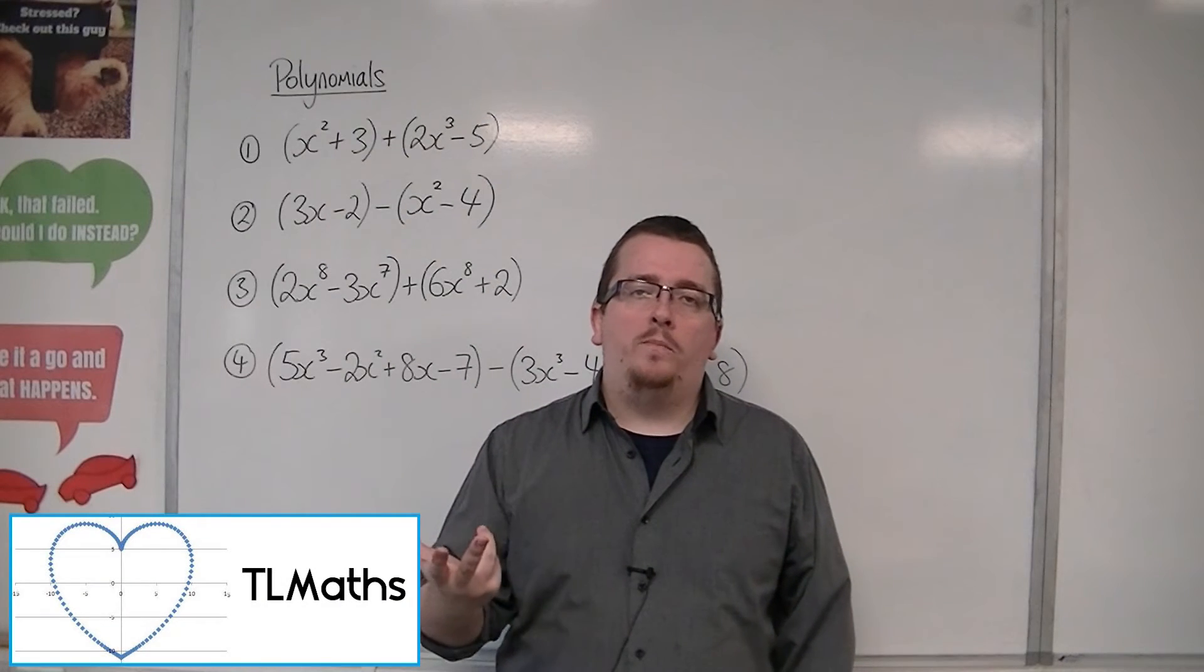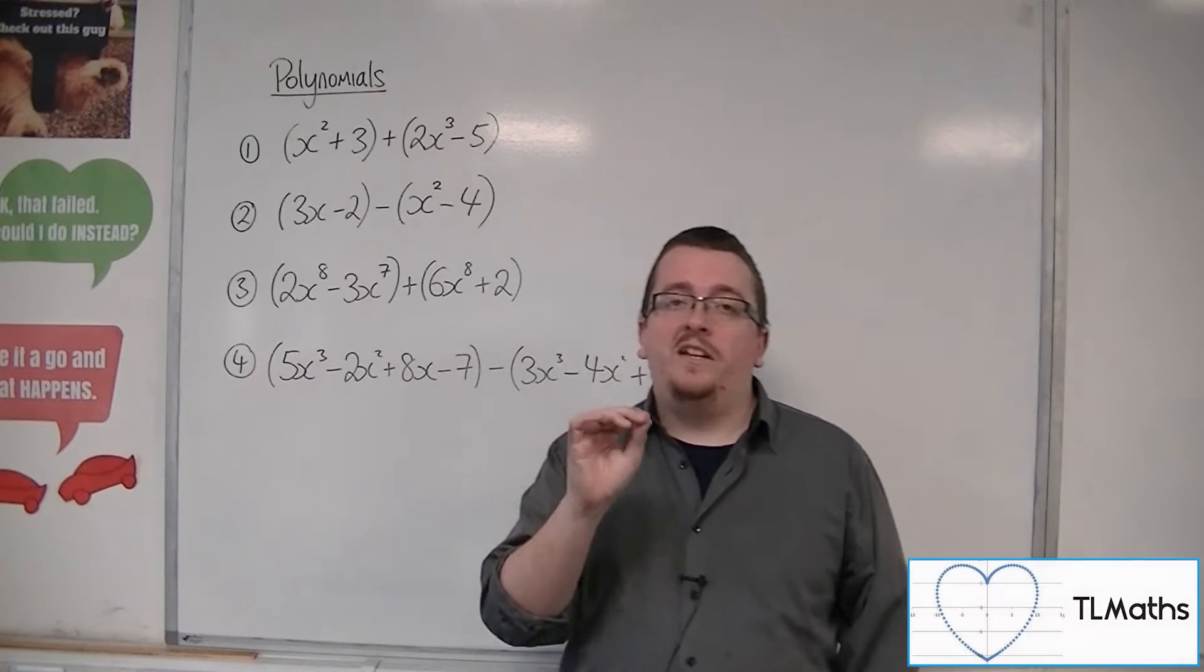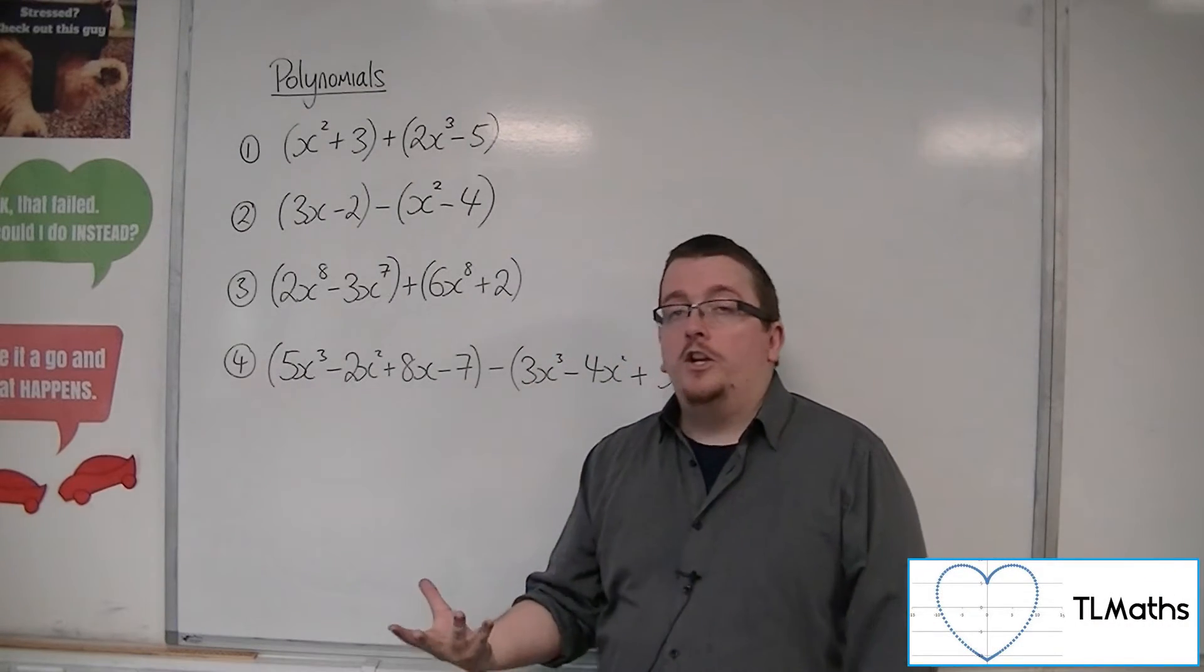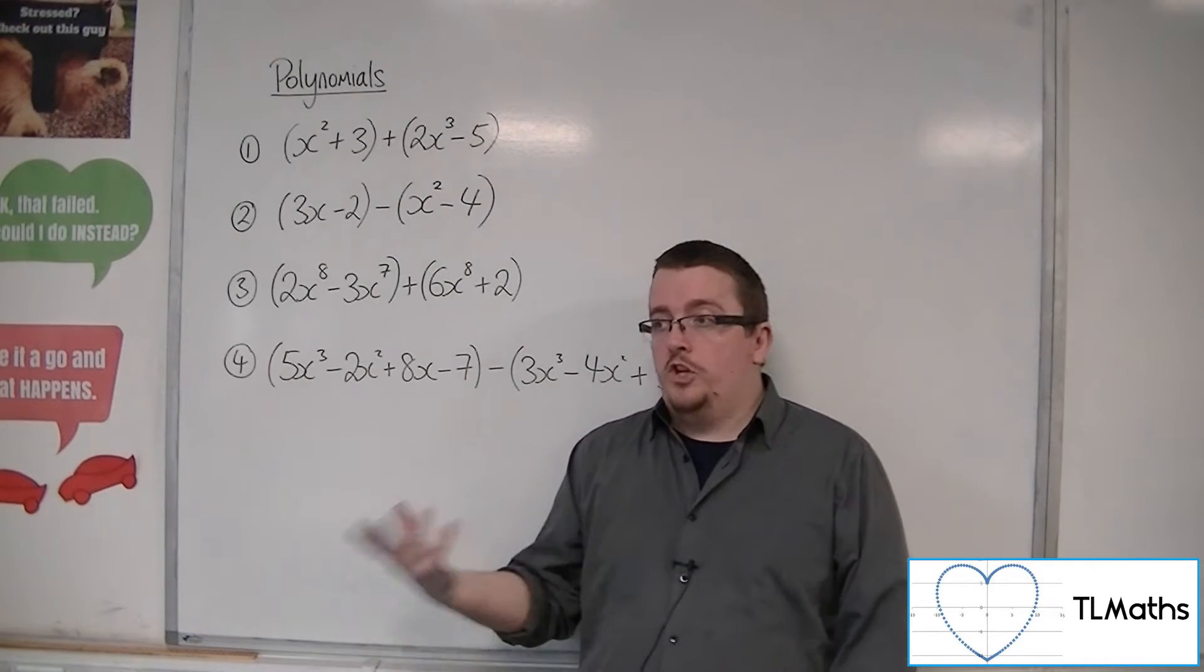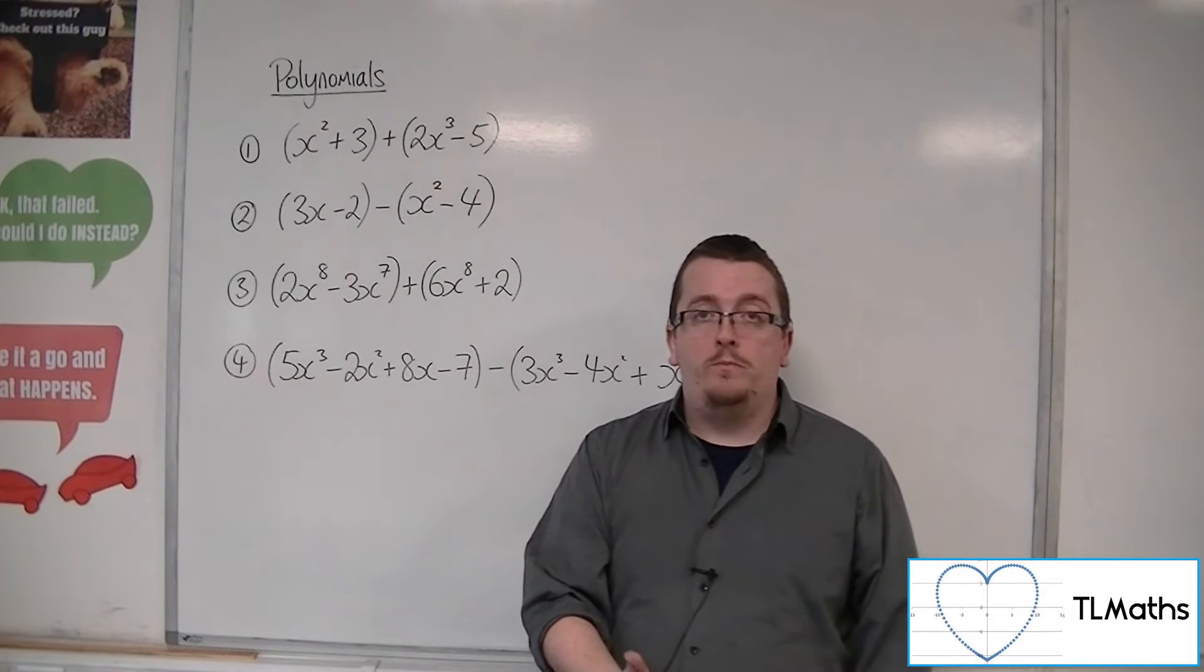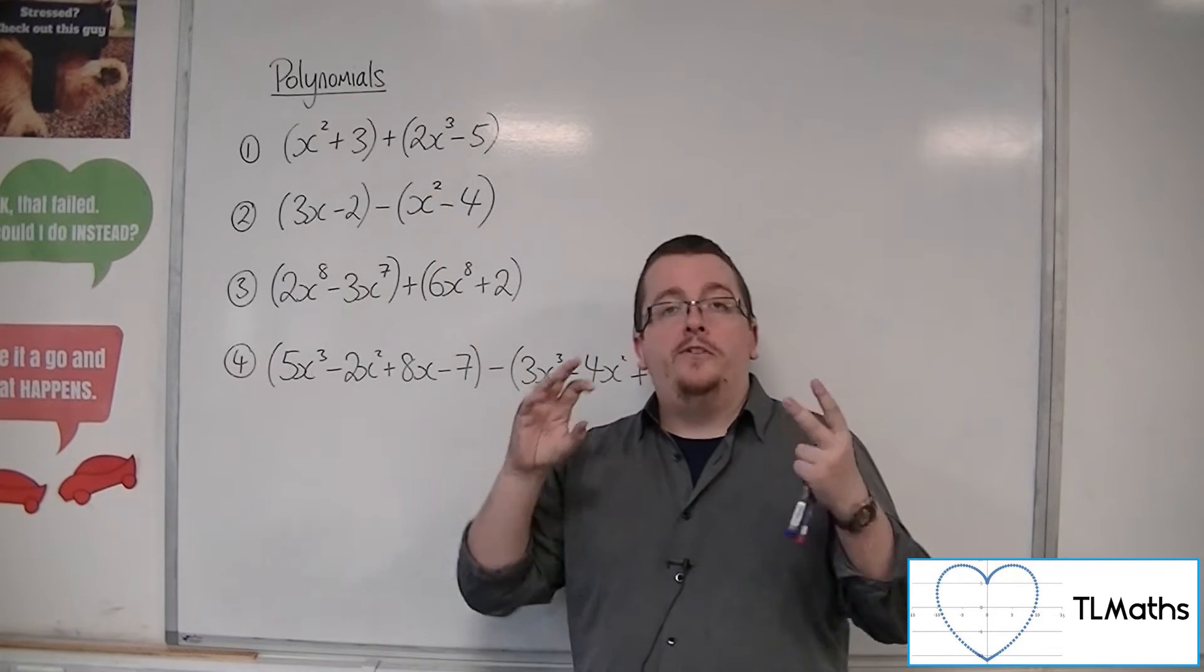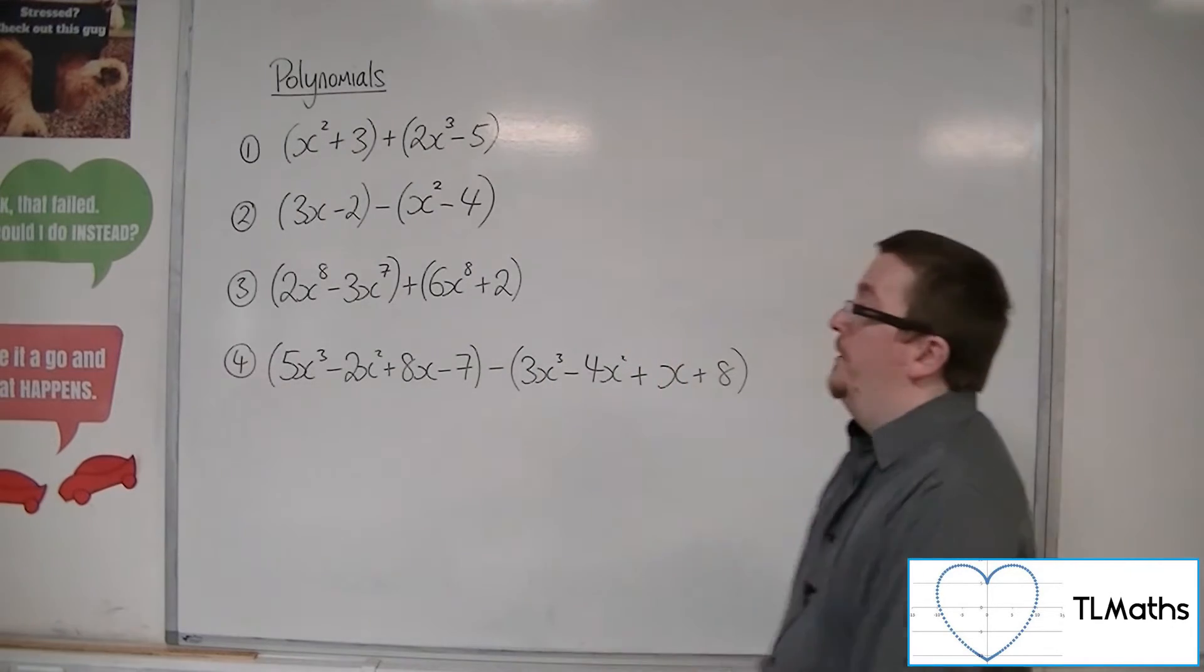When adding and subtracting with polynomials, all you need to really do is keep an eye on collecting like terms. So an x to the 8 can go with another x to the 8. You can't combine 2x squared and x cubed, for example, because the order of the x's are different. You can only collect those that have the same order or the same degree.